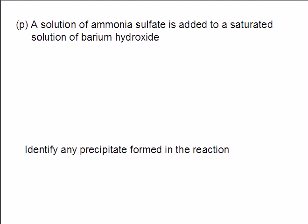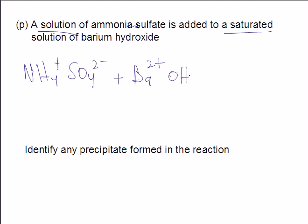Alright. P, a solution of ammonium sulfate is added to a saturated solution of barium hydroxide. Alright, getting back to what we know. Ammonium sulfate. This should be ammonium. NH4+, SO42-, because it's a solution. Saturated solution of barium hydroxide. Ba2+, OH-. Barium hydroxide is a strong base. Okay, I see ions everywhere. I'm going to be connecting and canceling. I'm going to make ammonium hydroxide and barium sulfate.